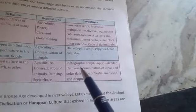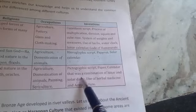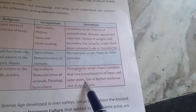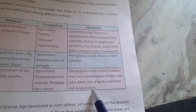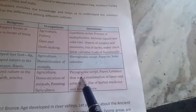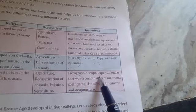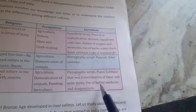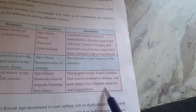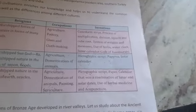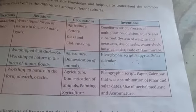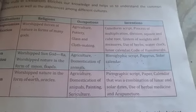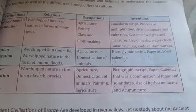In Chinese civilization, the script was Pictographic. They invented paper, and their calendar was a combination of both lunar and solar dates — a lunisolar calendar. They also developed the use of herbal medicine and acupuncture — a technique of applying pressure to treat diseases. These were all inventions of Chinese civilization.